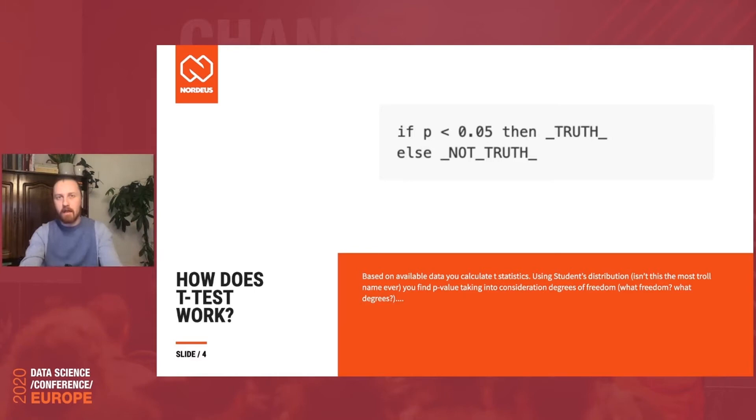So you take your data after you've done the split and measured something. And the first thing you need to do is calculate t-statistics. Then you need to figure out degrees of freedom, which is already a bit confusing name. And you're using it to determine the exact student's distribution that you're going to use to translate your t-statistics into the p-value. And once you've got it, if the p-value is less than 0.05, you can claim your hypothesis true or something like that. But if it's not less than 0.05, you cannot claim it false. So it's already a bit confusing. But the most important thing is, this wasn't really an answer to my question. I wanted to understand how t-test works.